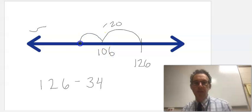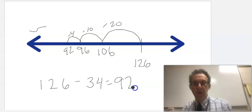Then I'm going to take another jump of 10. That gets me to 96. That's 30 altogether. And then just a smaller jump of 4 gets me back to 92. So 126 minus 34 is 92.